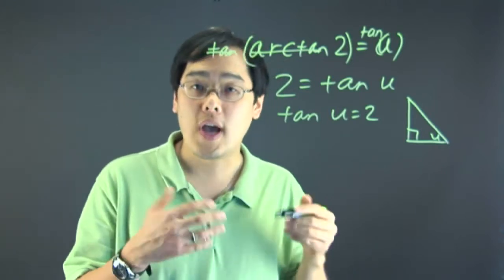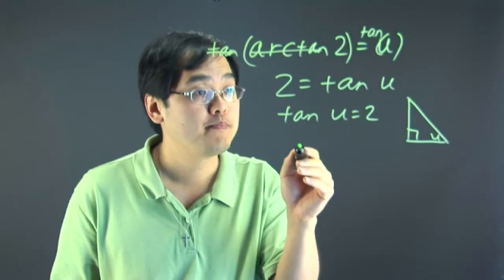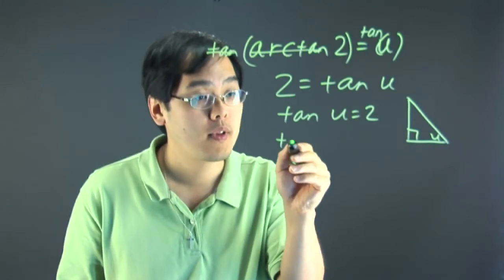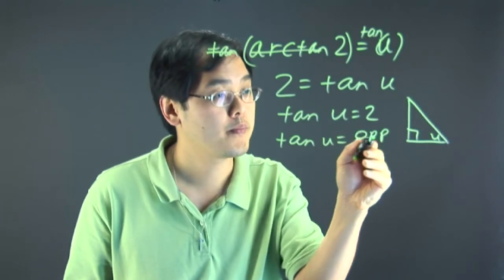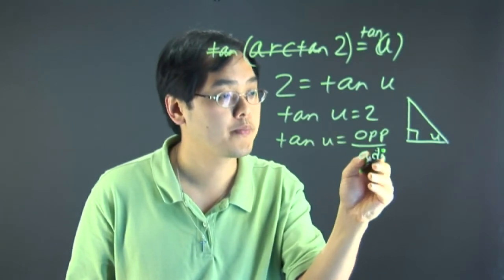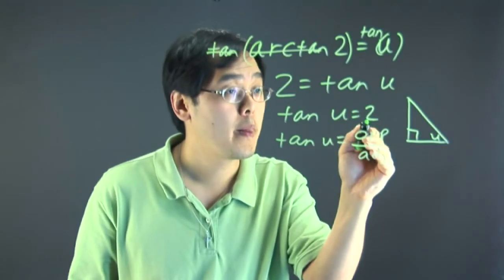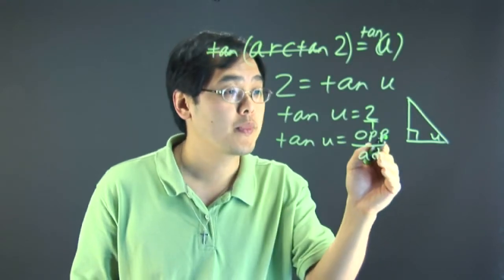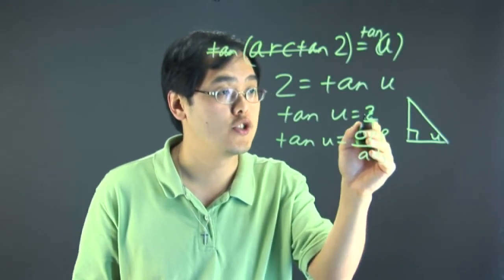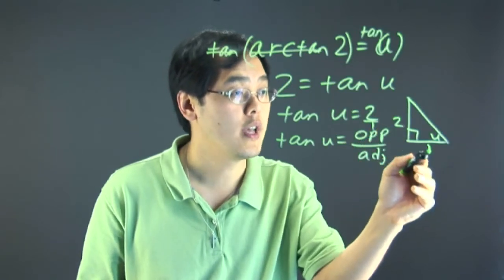What you have to think about is the definition of tangent as related to triangles. If you remember, tangent equals opposite over adjacent. That's the definition. For tangent, since this is 2, you have to think of this as 2 over 1. That means the opposite side is 2 and the adjacent side is 1.